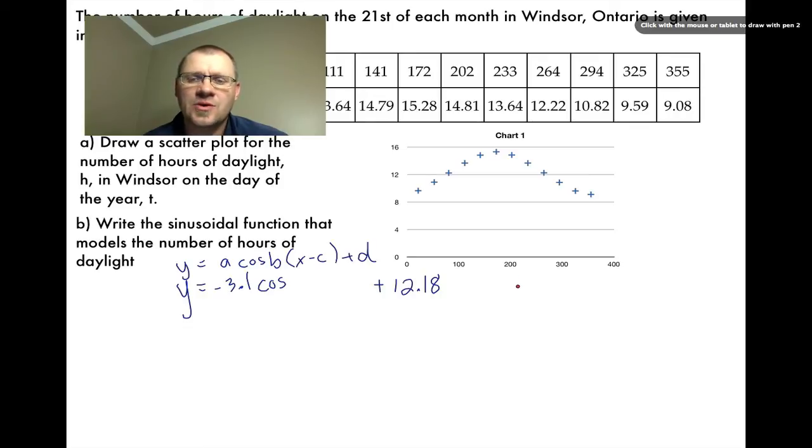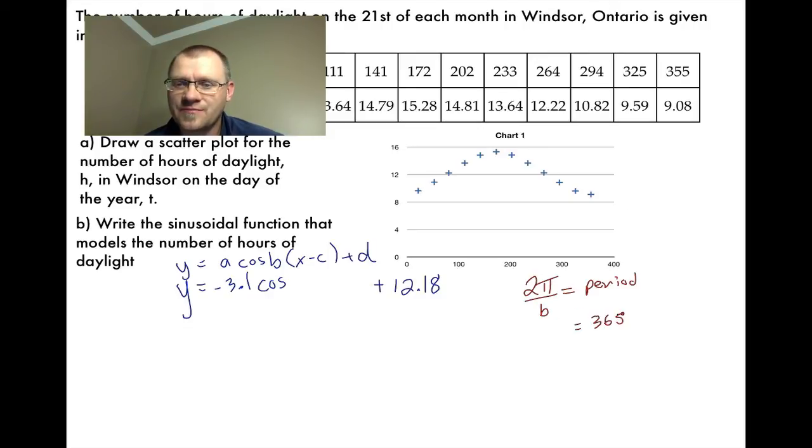We need to find a value for B and C. Remember that B is always connected to your period length. Well, we know that the new period is going to be 2π/B. And we know what the period length is of this function, because we're talking about the full year. So after a full year, this thing will repeat itself. So our period length is actually 365 days. So now we can solve for B, we get B equaling 2π divided by 365.